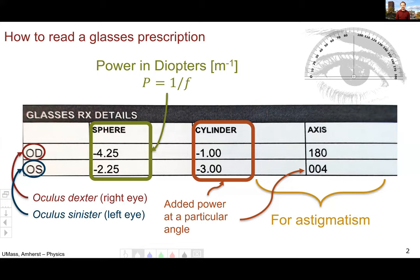So you can see the left eye requires a much stronger astigmatic correction with the minus three diopter power, but the overall prescription is actually weaker at only minus two point two five diopters.